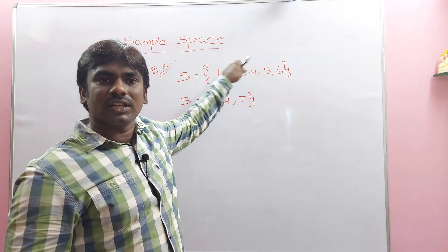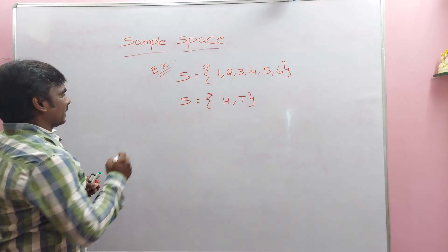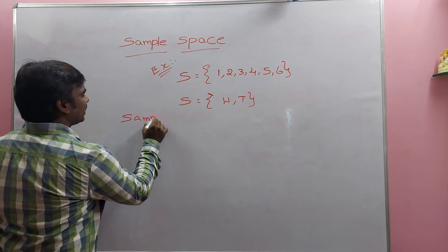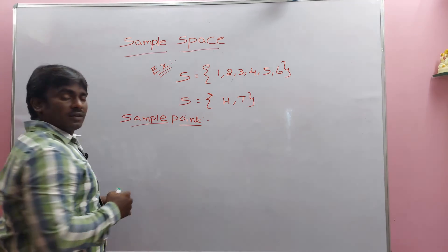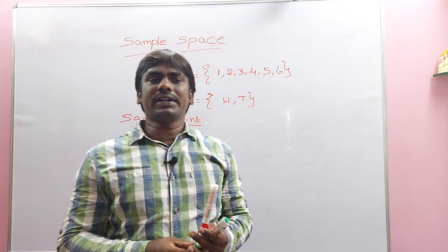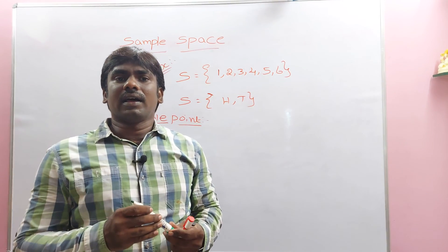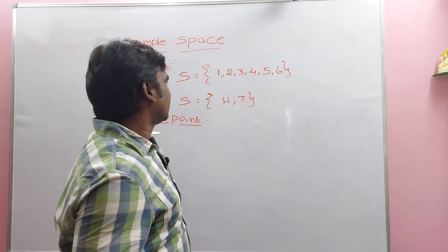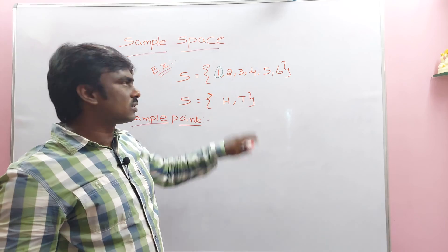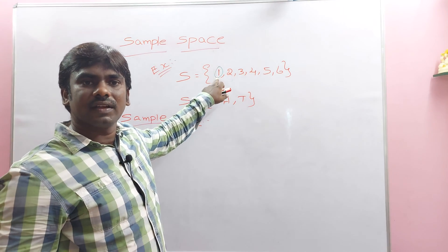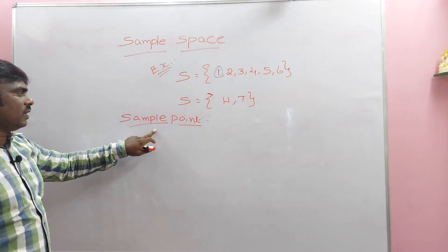A set of all possible outcomes in a random experiment is called sample space. Now, what is a sample point? Each outcome of a random experiment is called a sample point. For example, 1 is an outcome when rolling a die — that is a sample point.